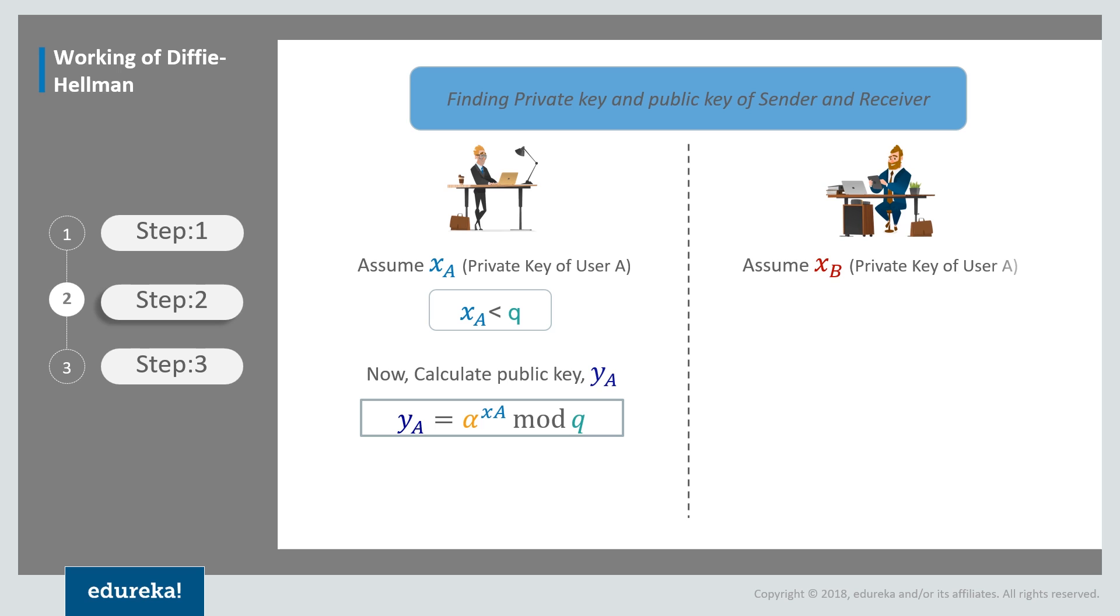Similarly, we also do this following step for user B. For user B we again have to assume the private key and the private key also has to be less than Q. Now we calculate the public key of user B, which is given by YB, which equals Alpha raised to the private key of user B modded by Q. After following these steps, user A has his public and private key and user B has his public and private key. After this, the only step that remains is key generation.